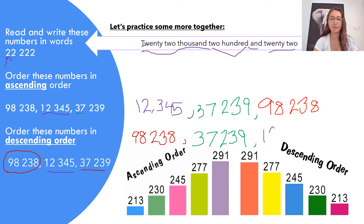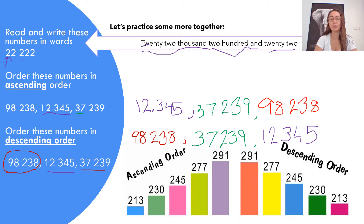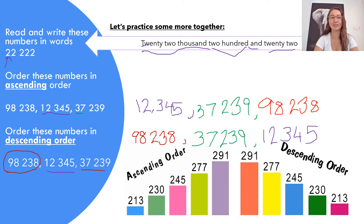These numbers become really easy once you have a great understanding of place value. When you understand what those numbers represent — the amounts and which would be larger than the other — it all comes together. Pause this video and get ready to have a go. You might want to watch it again, or go to the next slide to practice your independent tasks.